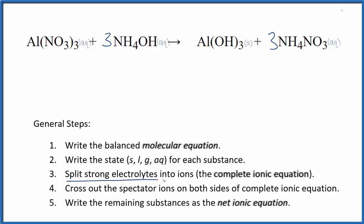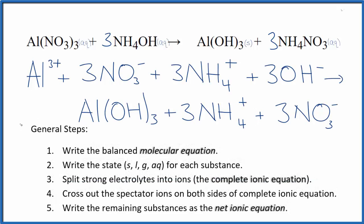Now we can split the strong electrolytes into ions for the complete ionic equation. That looks like this. So this is the complete ionic equation for Al(NO3)3 plus NH4OH.